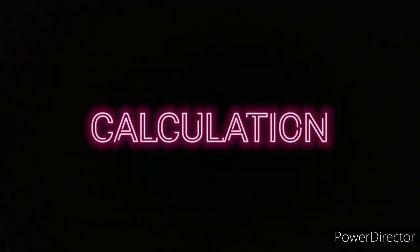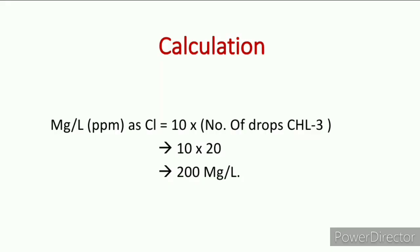We have to calculate the chlorine content of our water. The formula is: mg/L as Cl = 10 × (number of drops of CHL-3). We added 20 drops, so 10 × 20 = 200 mg/L. In one liter, the chlorine content is 200 mg. This is the calculation of our chlorine content.